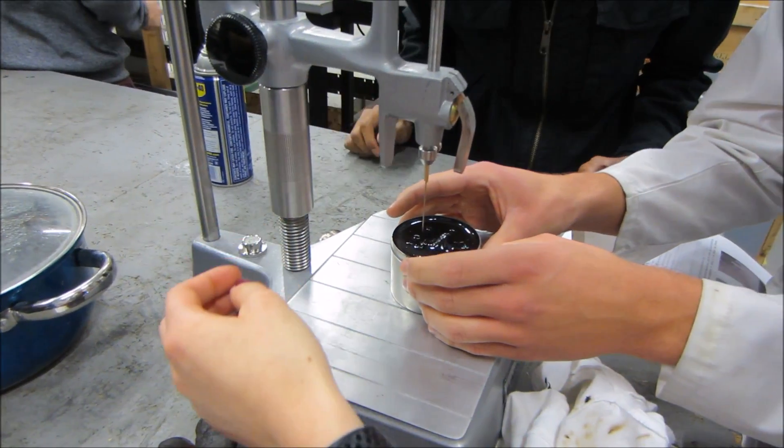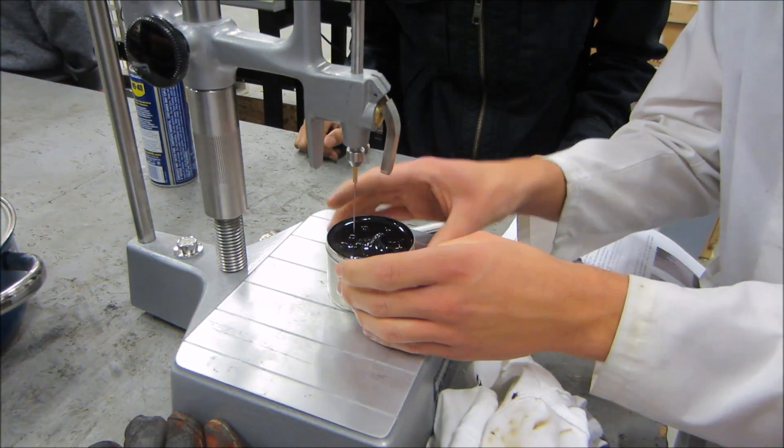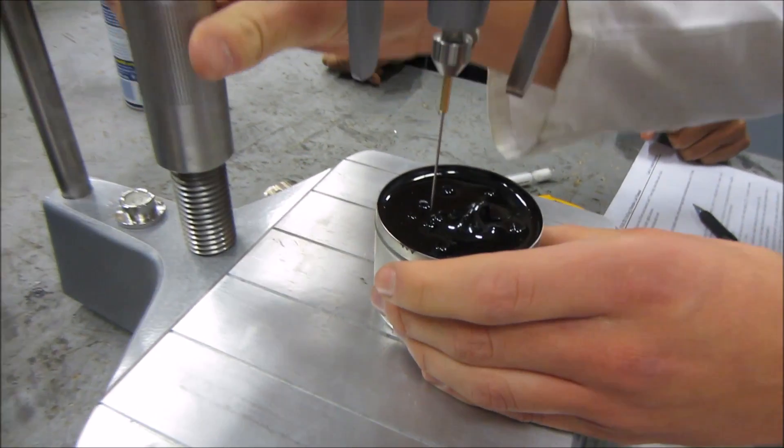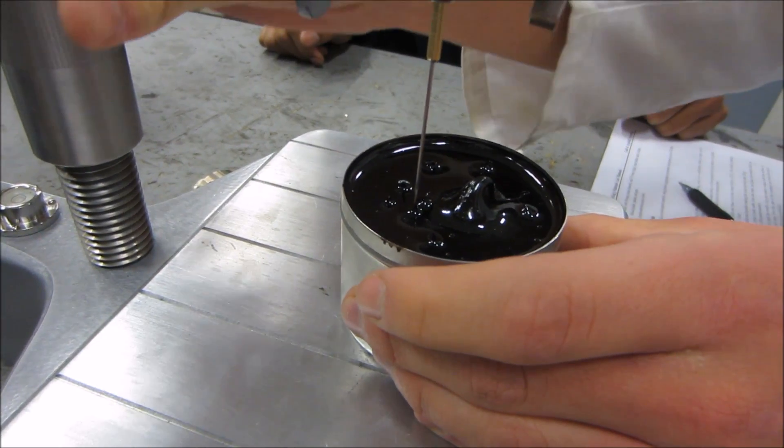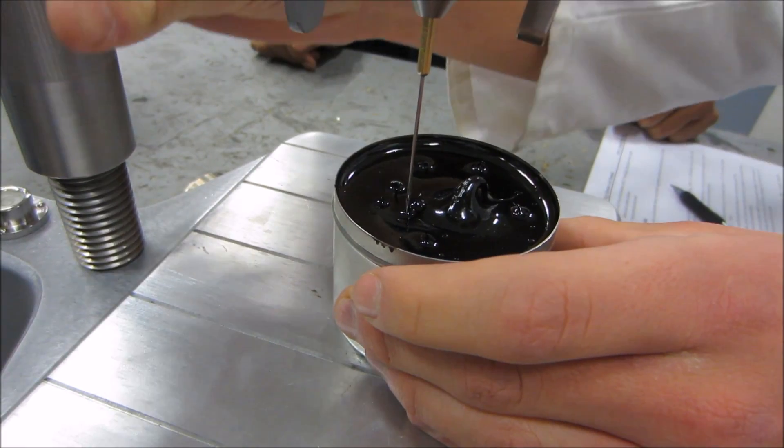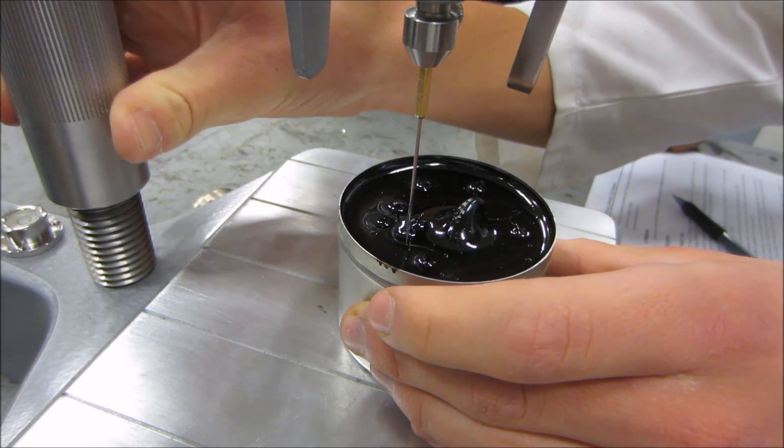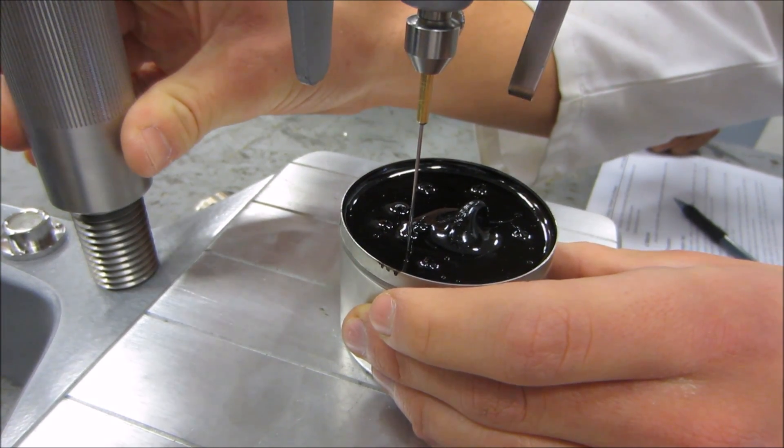Place the transfer dish containing the prepared specimen on the base of the penetration apparatus. Lower the needle so the tip just makes contact with the surface of the sample. This needle should be one centimeter away from the sides of the container and one centimeter away from any previous penetration locations.